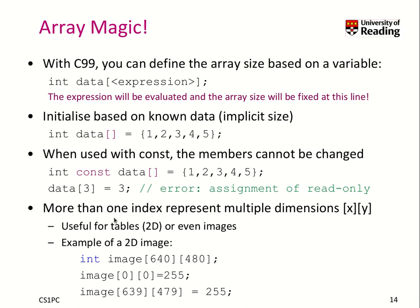You can use more than one dimension by continuing the bracket notation. Here we have a 2D image at 640 by 480, and then we use the brackets on the left-hand side to identify which element to write, or on the right-hand side if we'd like to read a value.